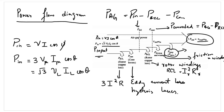In the next session, using these power flow diagrams and the equivalent circuit of the induction motor, we will derive equations for the stator copper losses, the core losses, the rotor copper losses, the air gap power, and the converted power.